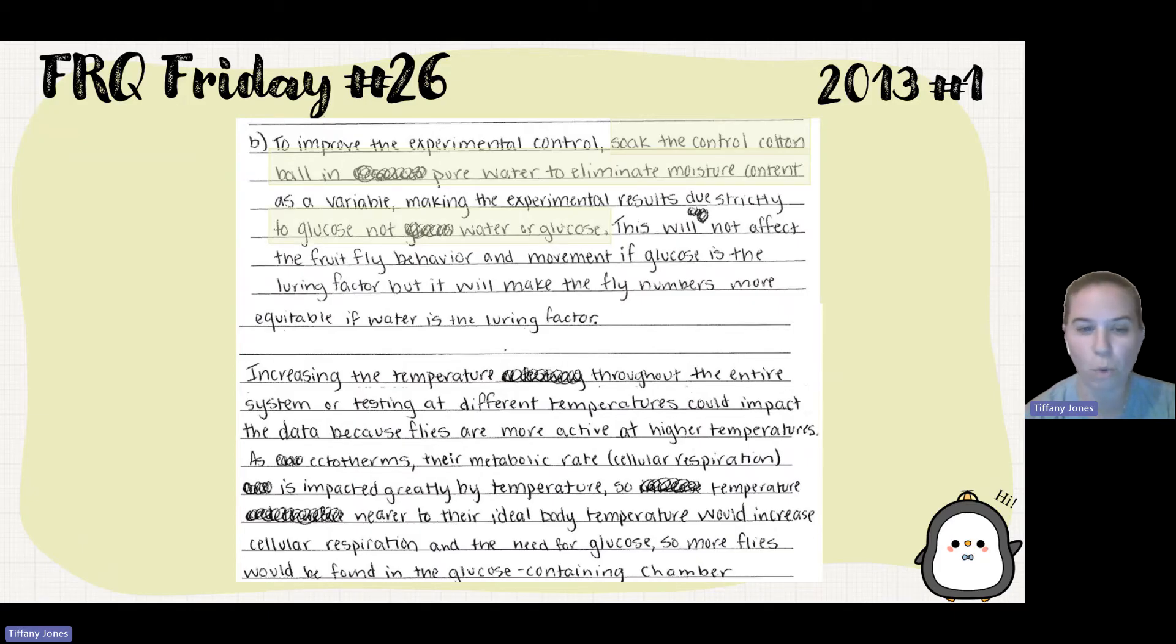Increasing temperature throughout the entire system or testing at different temperatures could impact the data because flies are more active at higher temperatures. As ectotherms, their metabolic rate, cellular respiration, is impacted greatly by temperature. So temperature nearer to their ideal body temperature would increase cellular respiration and the need for glucose. So more flies would be found in the glucose-containing chamber.